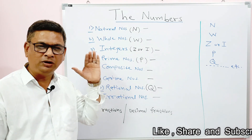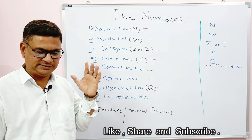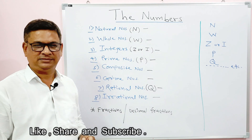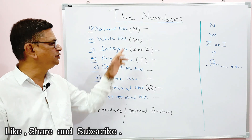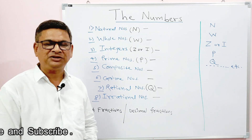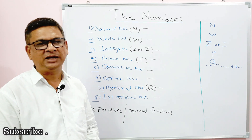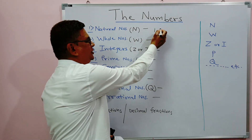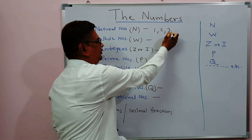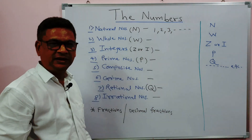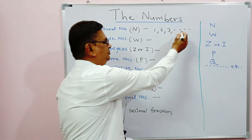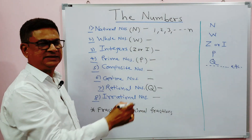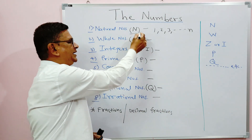First are natural numbers. The set of natural numbers is denoted by capital N. Natural numbers are all positive integers: 1, 2, 3, and so on. The nth natural number is denoted by small n. These are the countable positive integers.